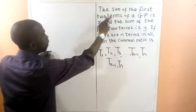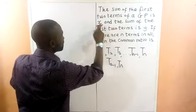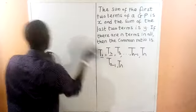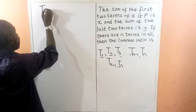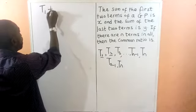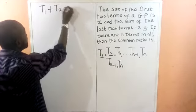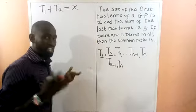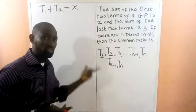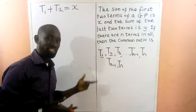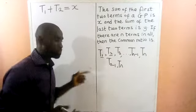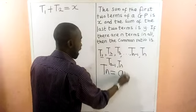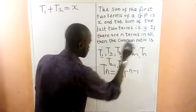The sum of the first two terms of the GP is X. The general formula for the Nth term of a GP is TN equals A times R raised to the power of N minus 1.